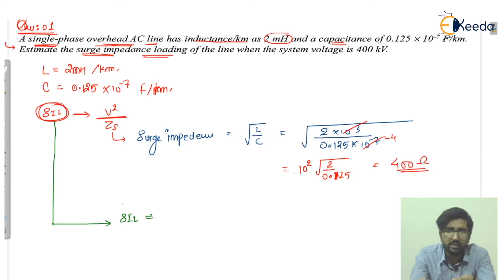So ultimately that is cancelled out and we are left with the ohmic value, that is a resistive load. And that SIL is V squared, and that voltage is given as 400 kilovolts, so 400 into 400.